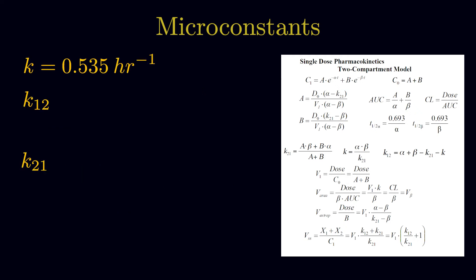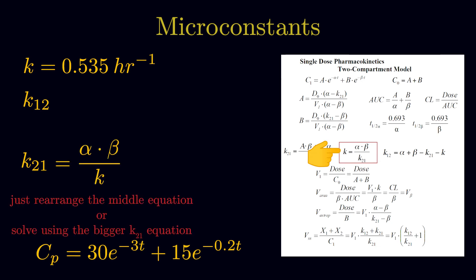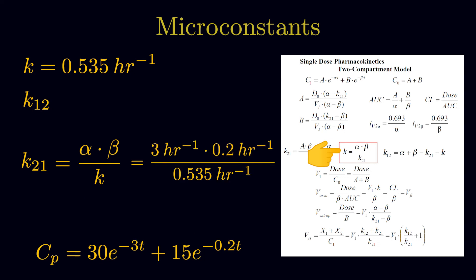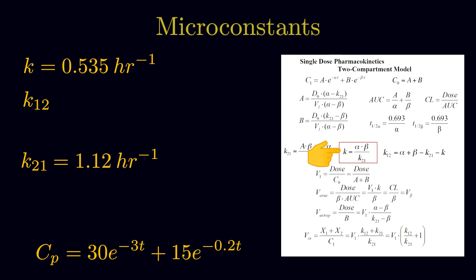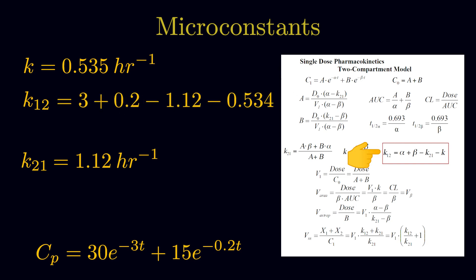Next, we will interpret the data using the two-compartment model and solve for K12 and K21. We first solve for K21 since we have all required variables. K21 equals alpha times beta divided by K: 3 times 0.2 divided by 0.535, giving K21 equal to 1.12 per hour. Then K12 equals alpha plus beta minus K21 minus K: 3 plus 0.2 minus 1.12 minus 0.535, giving K12 equal to 1.546 per hour.